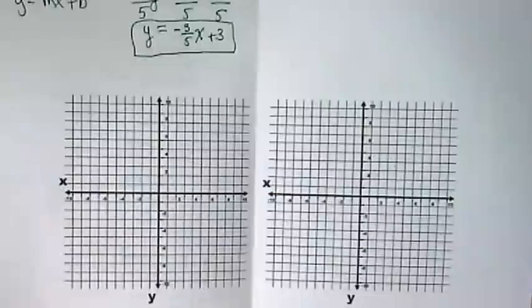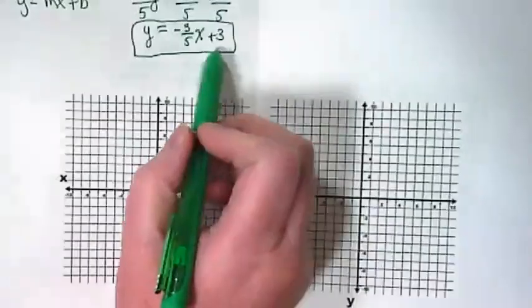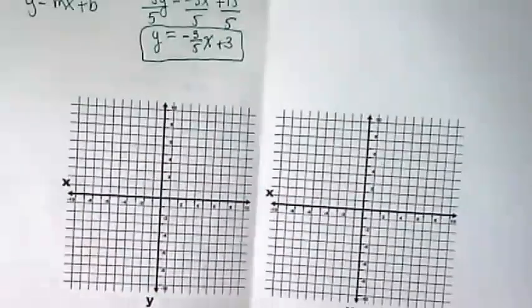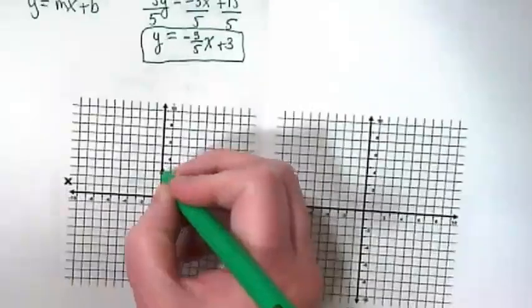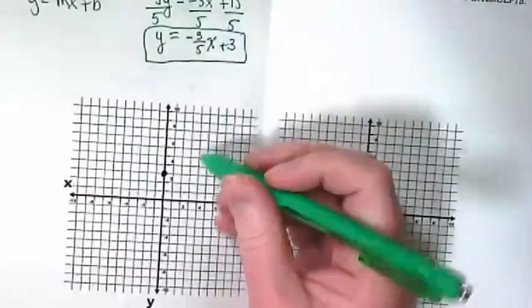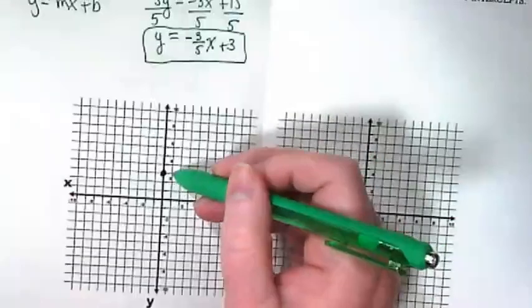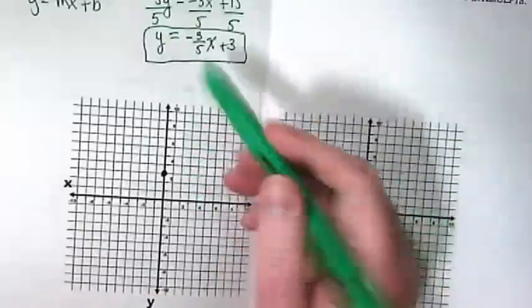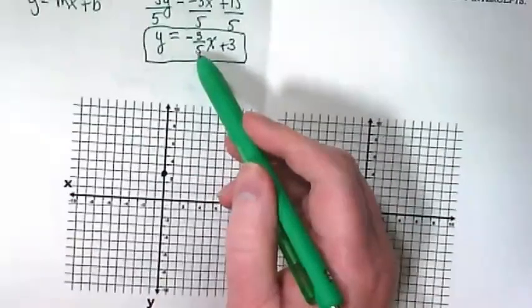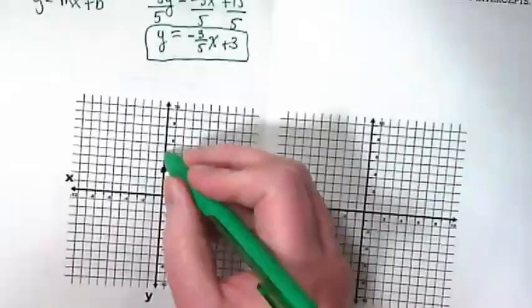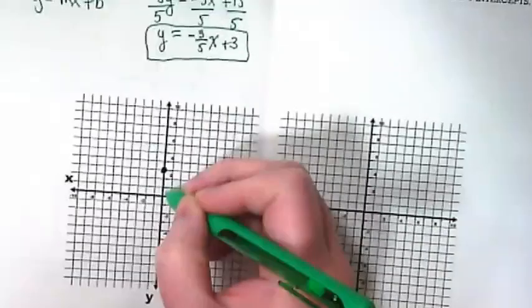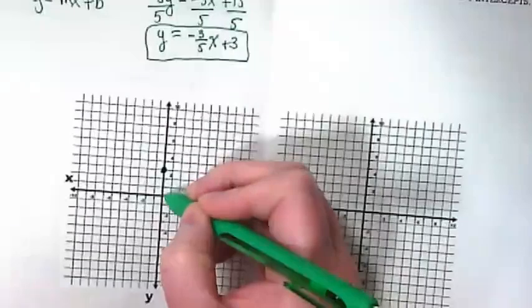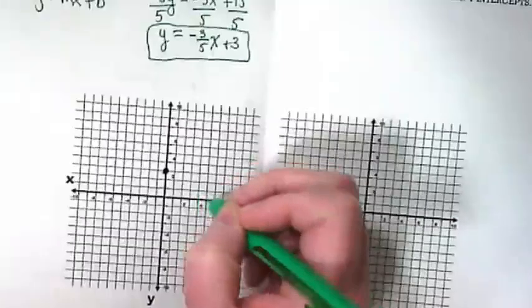So, what is my y-intercept? Positive 3. This graph's scale counts by 2, so I'm putting that point in between the 2 and the 4. And then my slope is negative 3 over 5, so I'm going to rise up 3 or run down, or rise or run. I'm going to rise up 3 or go down 3 and run 5.